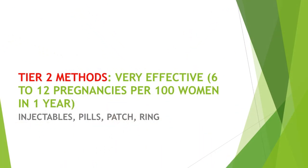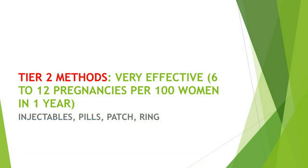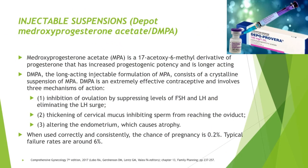The Tier 2 methods are very effective with only 6 to 12 pregnancies per 100 women in one year, and include injectables, pills, the patch, and the ring. For injectables, we have the injectable suspension depo-medroxyprogesterone acetate, or DMPA. Medroxyprogesterone acetate is a 17-acetoxy, 6-methyl derivative of progesterone with increased progestogenic potency and longer duration of action. The DMPA consists of a crystalline suspension of MPA.